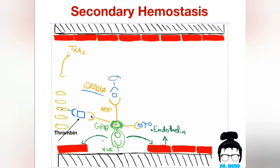How do we stabilize it? Through secondary hemostasis. Secondary hemostasis gives us thrombin. Thrombin acts on fibrinogen, converting it to fibrin. And whenever fibrin is the one cross-linking the platelets, connecting the platelets, the clot is stabilized.